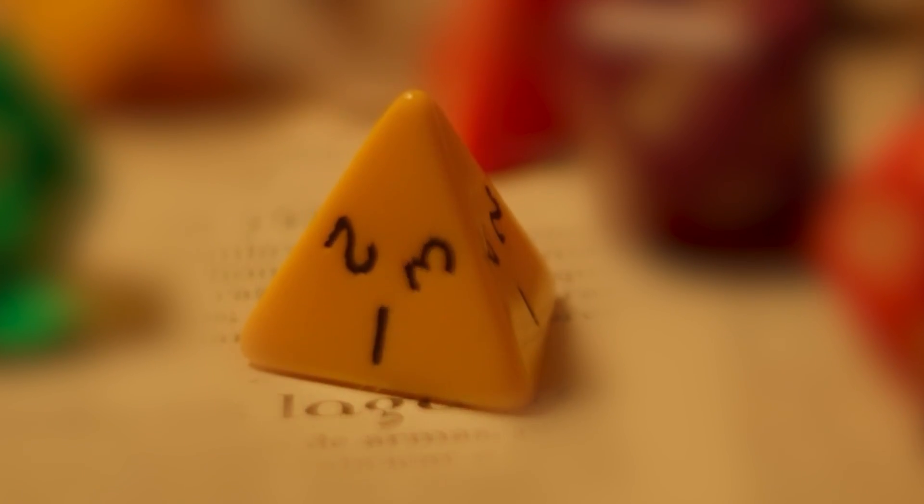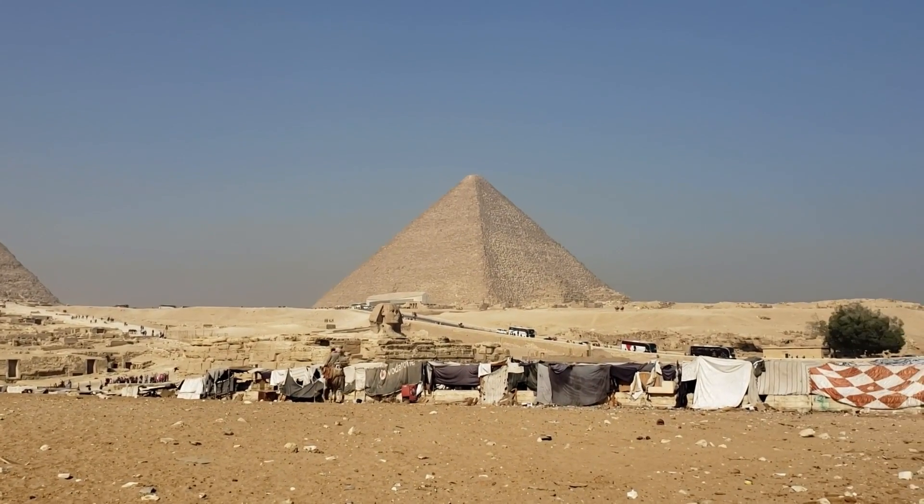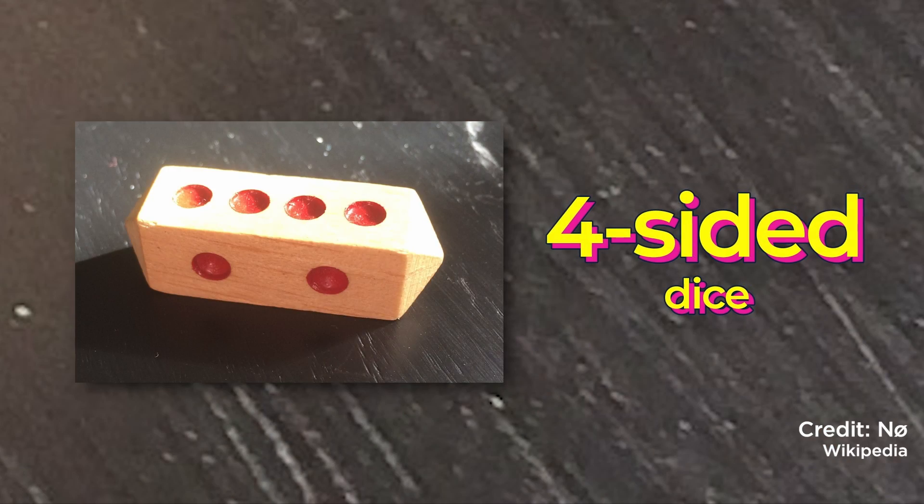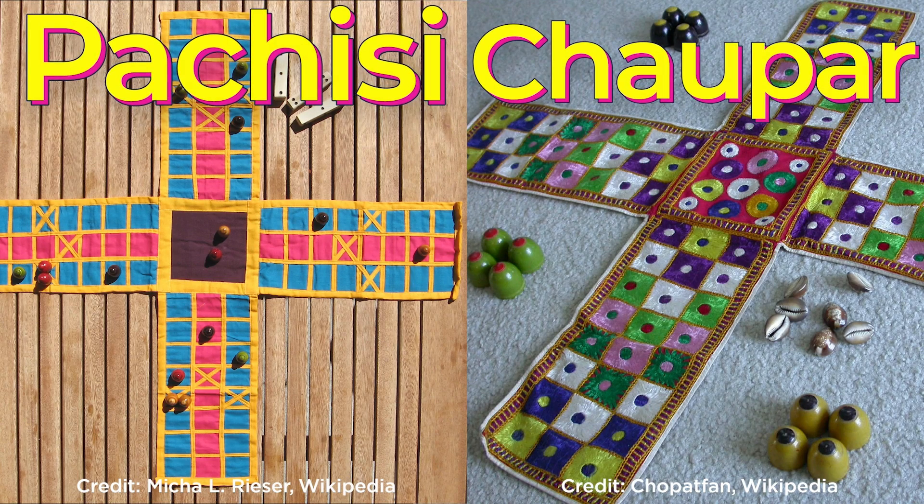Stepping up the complexity, dice also come in three-sided prism forms. Cultural history reveals dice of varying facets. Four-sided dice with significant mythological implications have been used in Indian games such as Pachisi and Chaupar since ancient times.